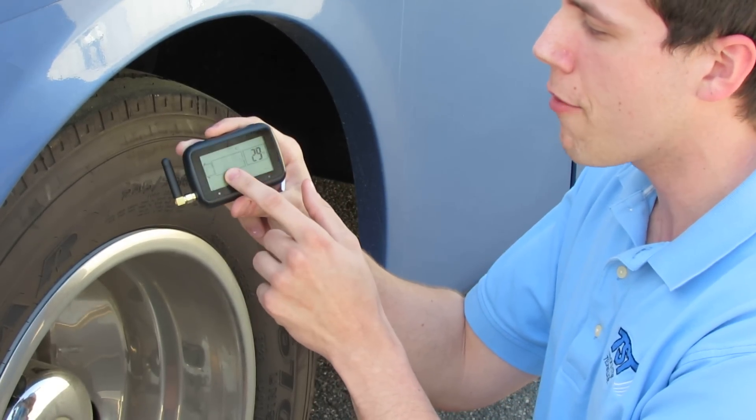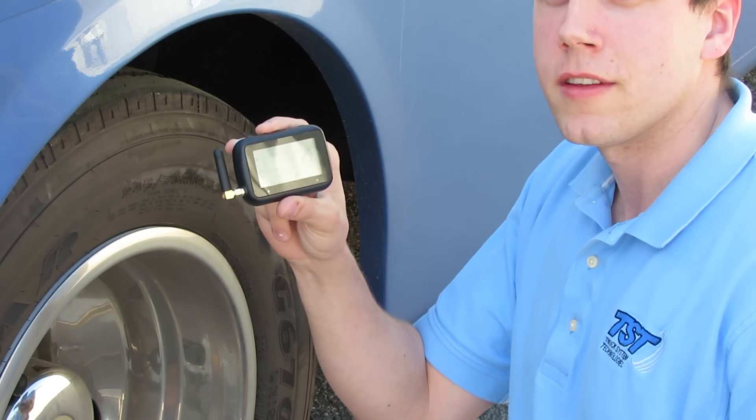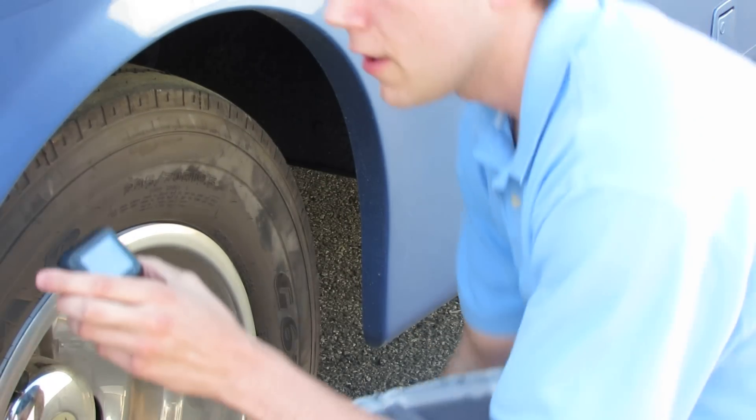Right now, the tire pressure and temperature is on the screen, but for our demonstration, we are going to set the tire pressure high and lows and the temperature next. To do so, take your monitor and press the mode button for 6 seconds.